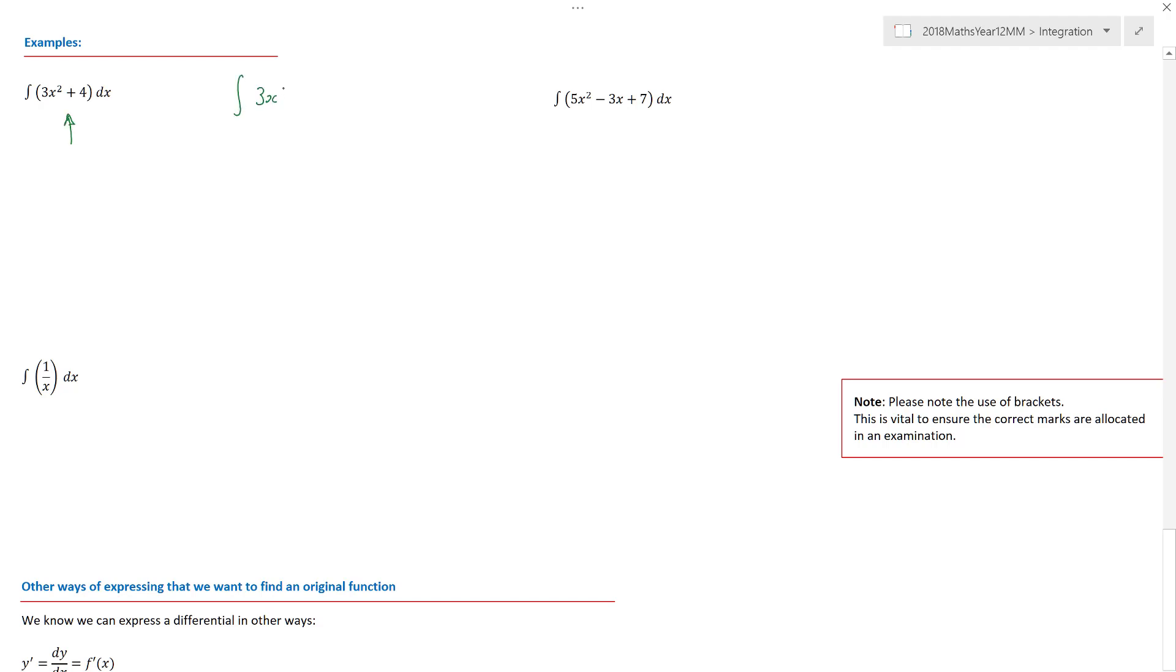If I was to write 3x squared plus 4 dx, then unfortunately, in the eyes of the methods examiners, that would be bad notation. Because in this situation, you've got a 4 with a dx on it, and the integration sign doesn't seem to belong to anything. You're integrating a function with respect to x. And so that function must be in brackets. Not in all cases. And I'll explain in a moment. But in this situation, in this question,